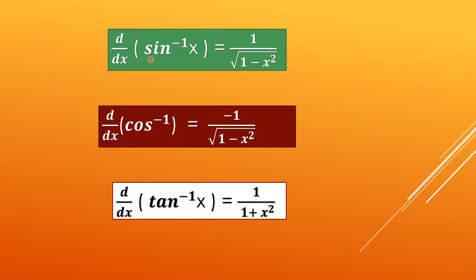The first says that derivative of sine inverse x is equal to 1 upon whole under root of 1 minus x square. Please note that it is sine inverse. Don't take it for sine x.